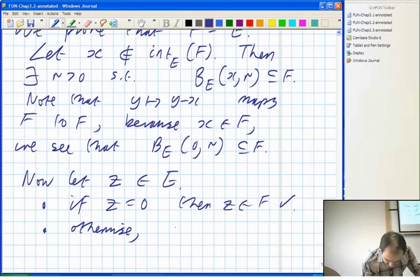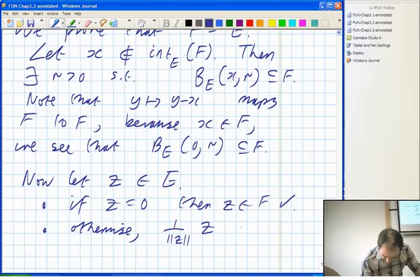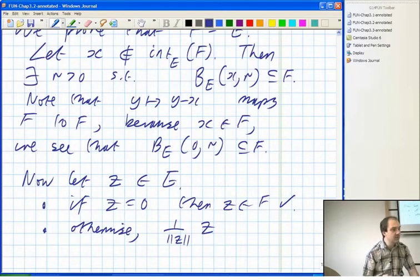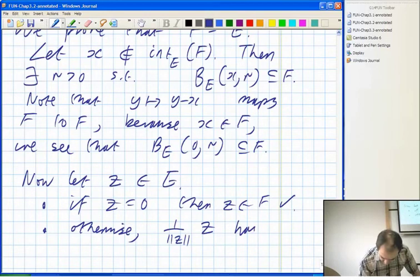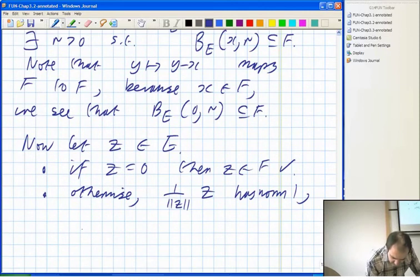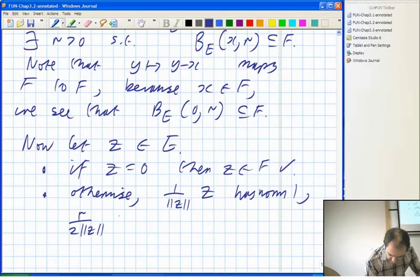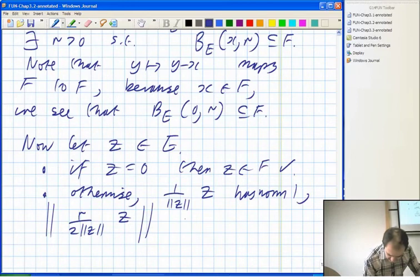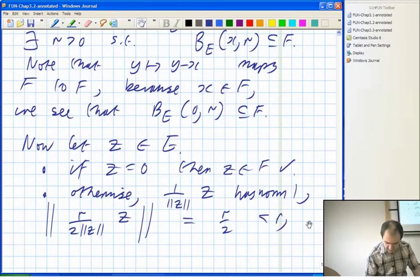Otherwise, note that 1 over norm Z times Z has norm 1. And then if you put R over norm Z, you'll get something of norm R. And R over 2 norm Z times Z, if you look at the norm of that, it's equal to R over 2, which is smaller than R.